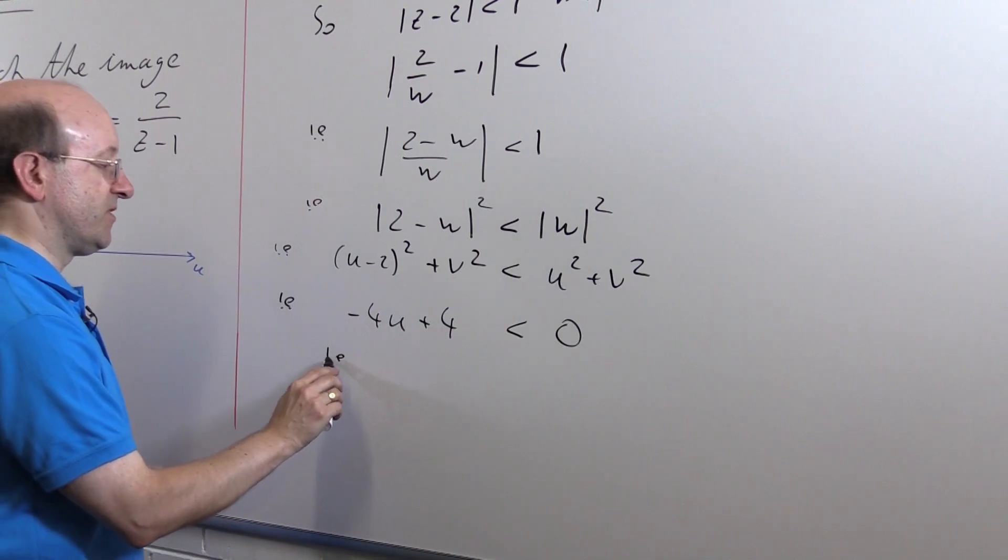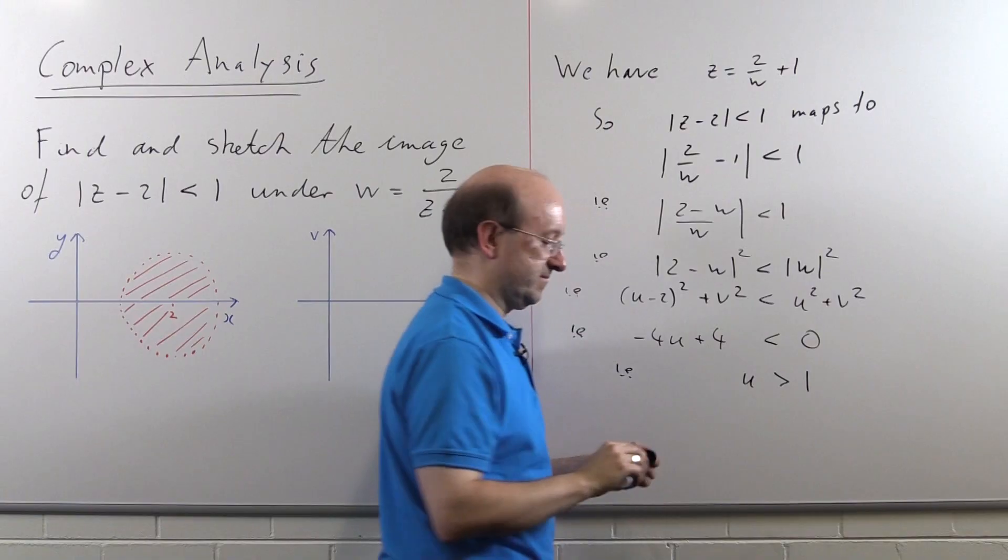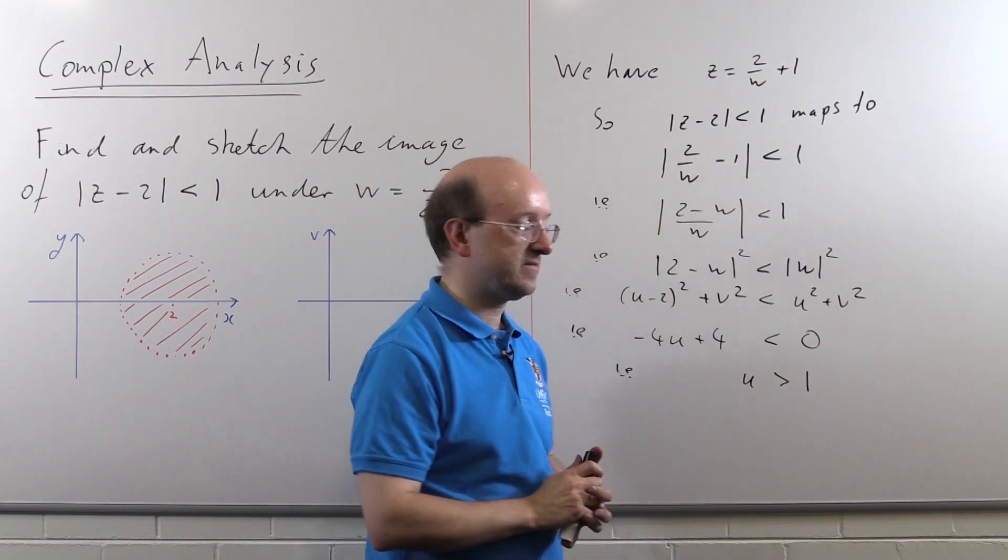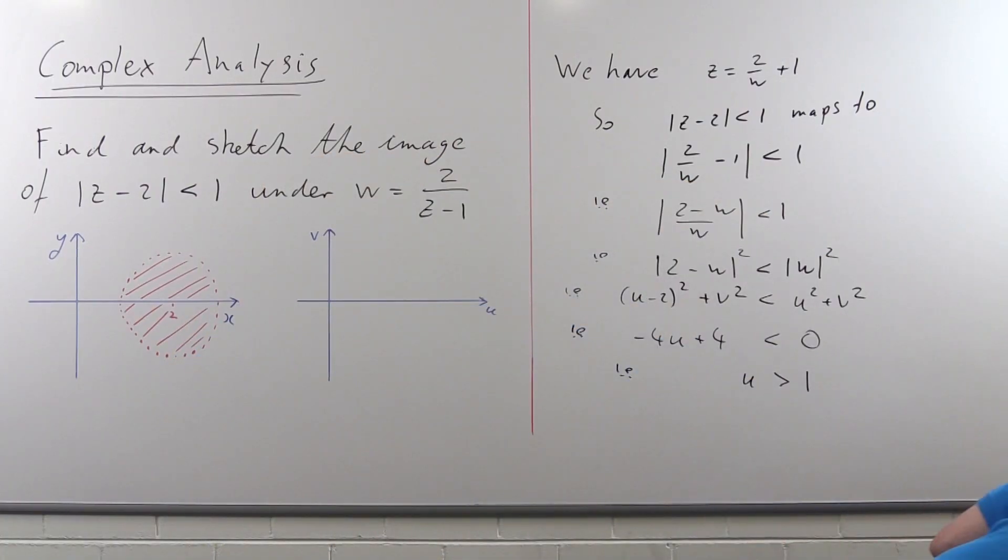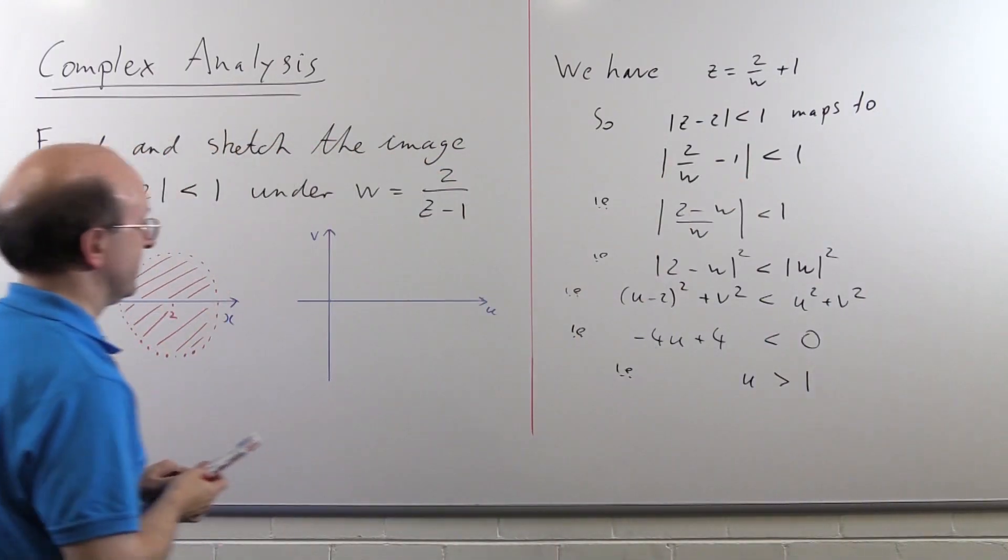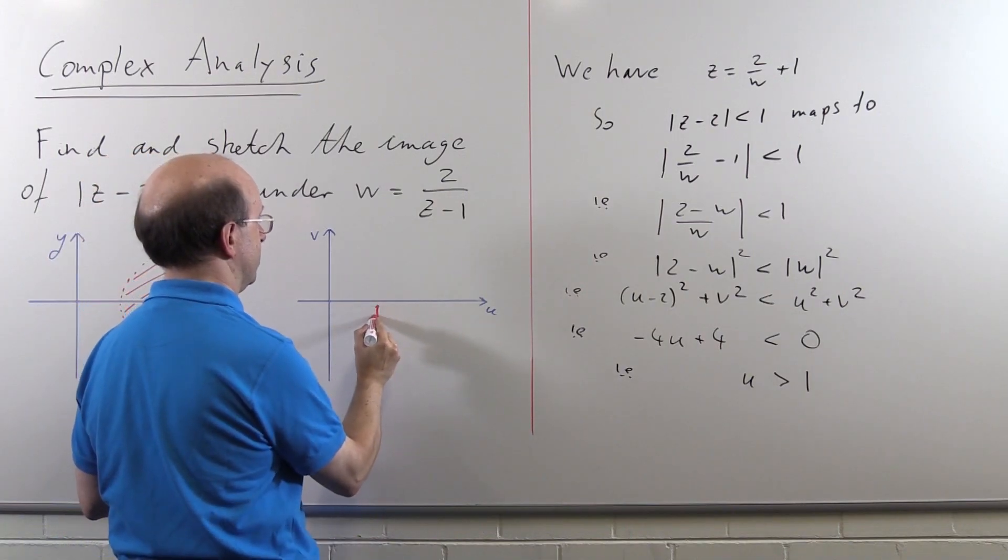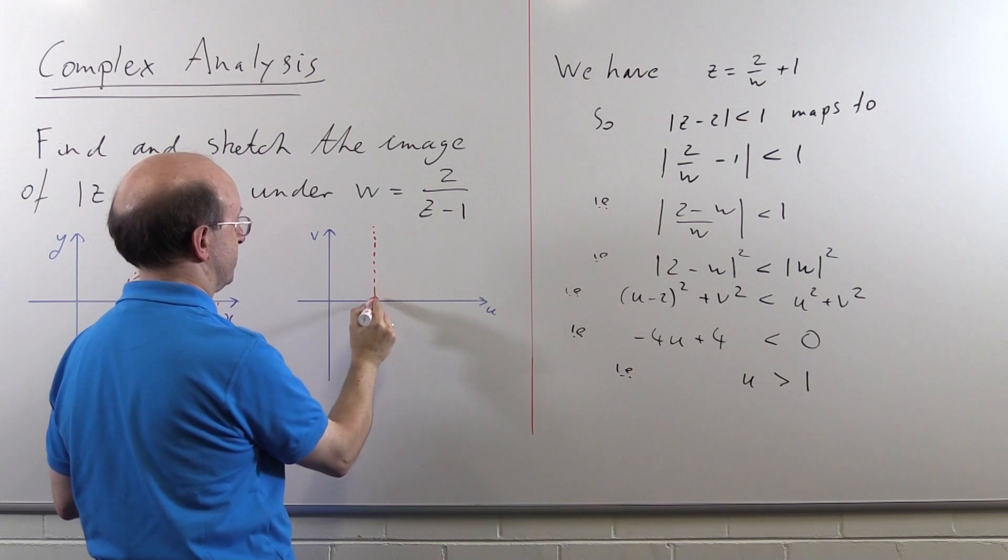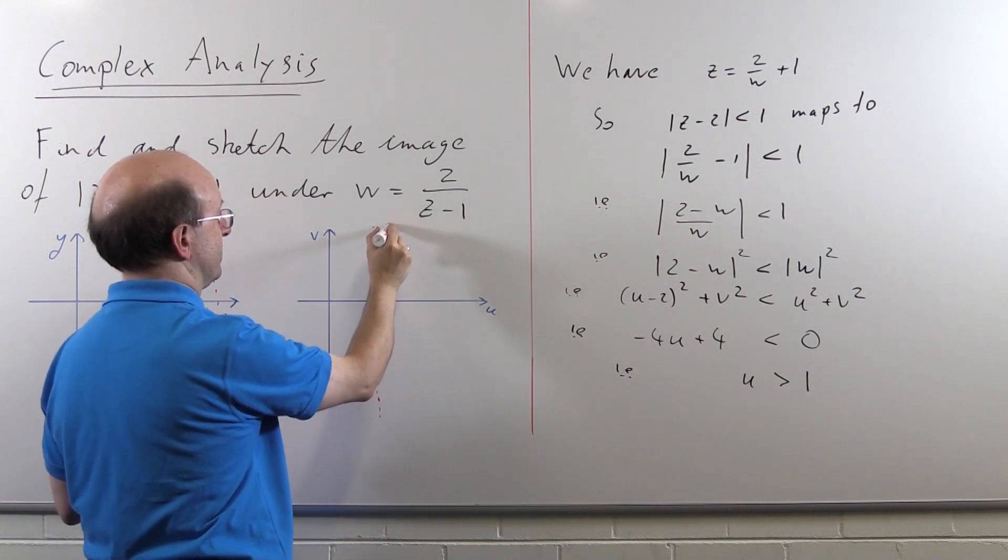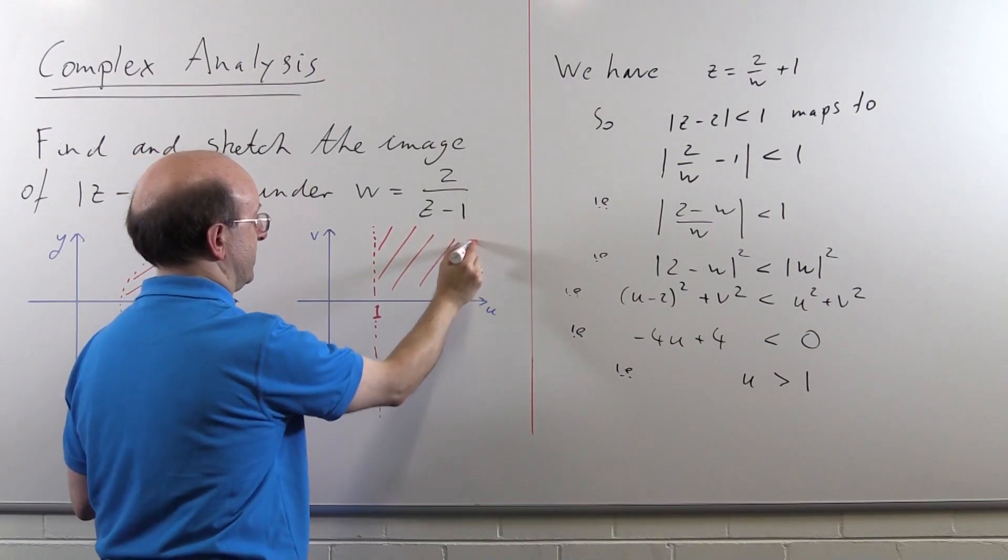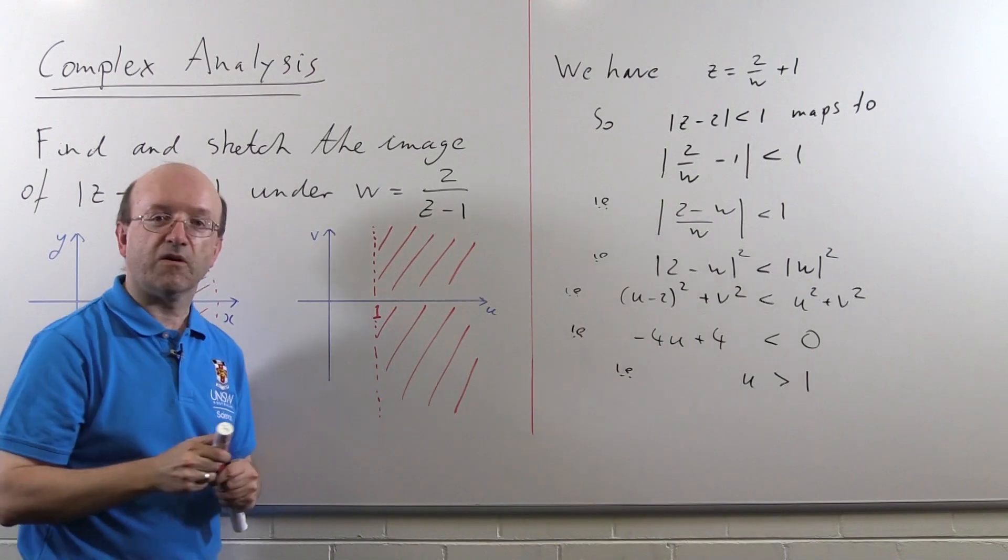But that, of course, is, as promised, u bigger than 1. So now we can sketch our region. u equals 1. Well, we'll put it about here. And it's everything on that side.